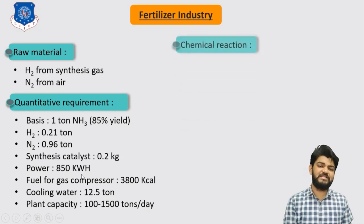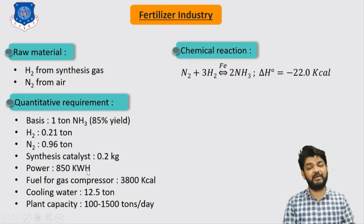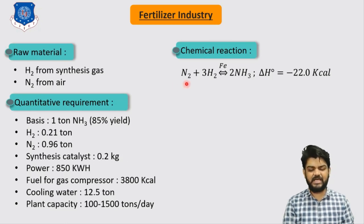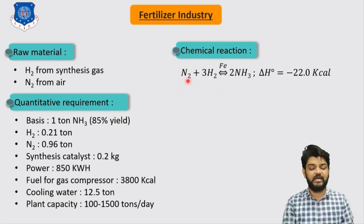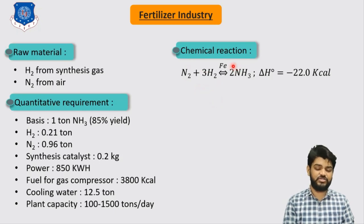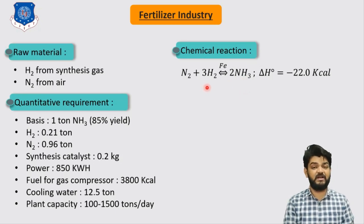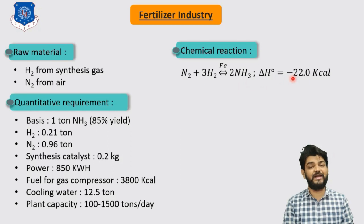The chemical reaction for ammonia production involves reacting nitrogen and hydrogen with an iron catalyst to produce two moles of ammonia: N₂ + 3H₂ → 2NH₃. This is an exothermic and reversible reaction with a heat of reaction of approximately −22.0 kcal.